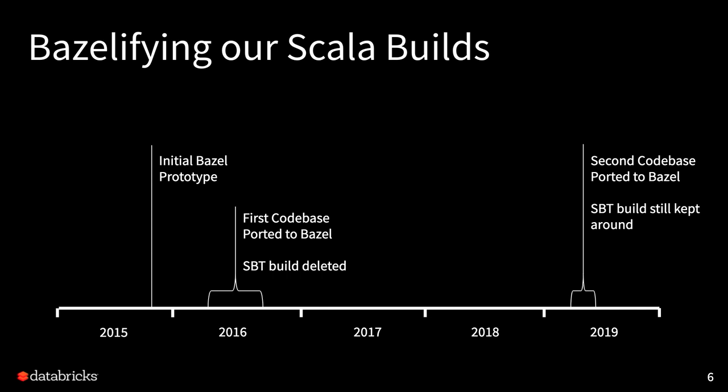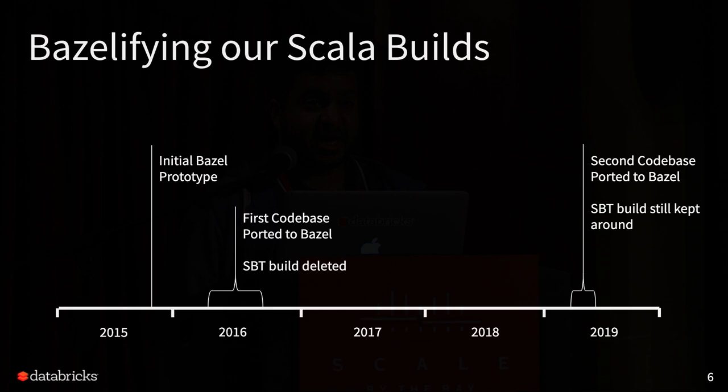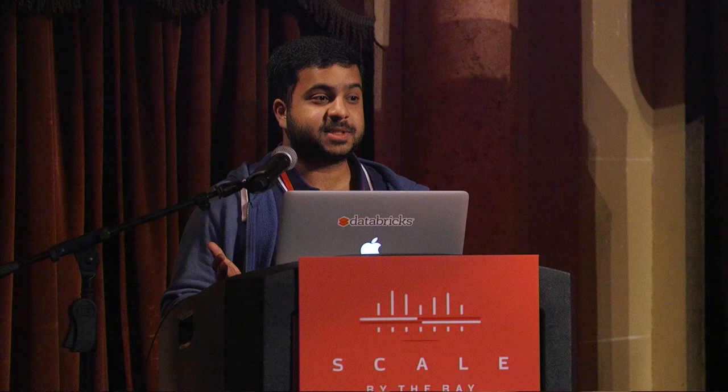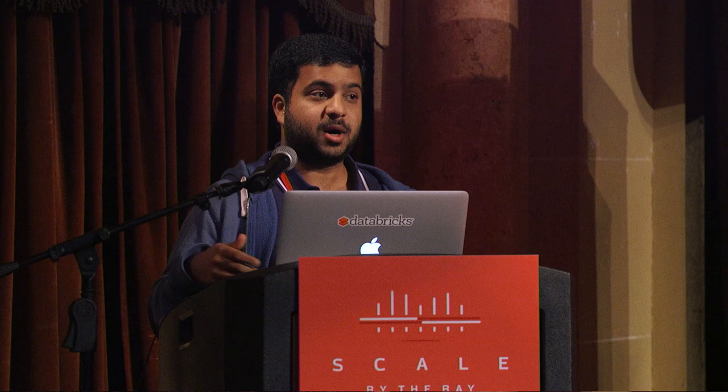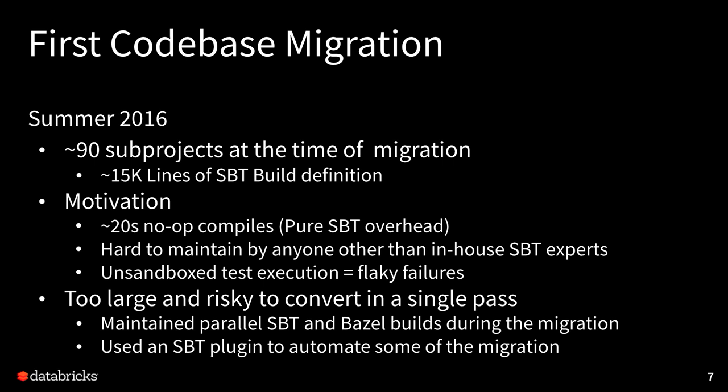We're pretty early Bazel users. We started way back in fall of 2015 with an initial prototype — it was actually just one of our internal hackathons where we said, 'it can't be that hard to get some subset of our build running on Bazel.' We were able to pull it off in about a week. By Q2 of 2016 we decided to just do it. By late 2016 we actually did the conversion and deleted SBT. Then in 2019 we applied the same techniques to our second monorepo.